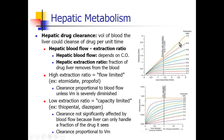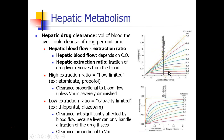Other drugs have a low hepatic extraction ratio — drugs like thiopental or diazepam. These drugs are not significantly affected by hepatic blood flow because the liver is already not doing a very good job of extracting drug from the blood as it passes through. So increasing blood flow is really not the rate-limiting step; the rate-limiting step is more the liver's ability to extract.